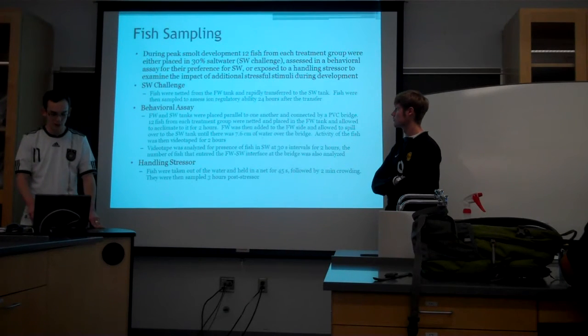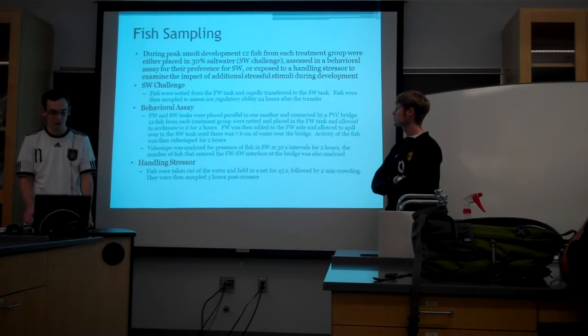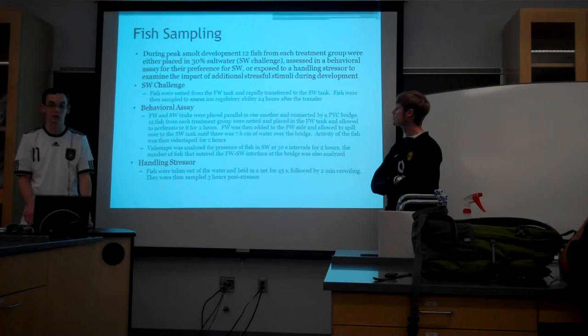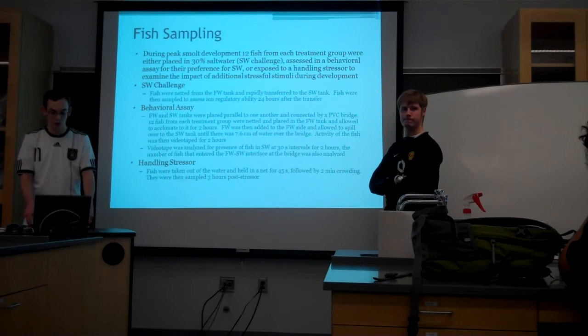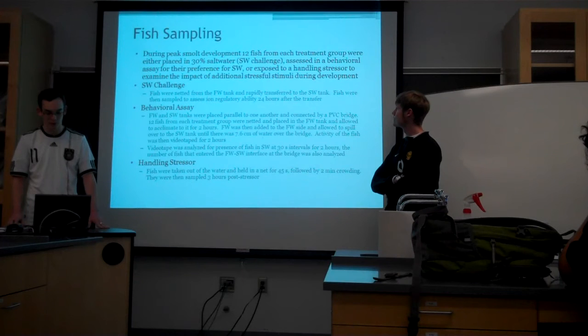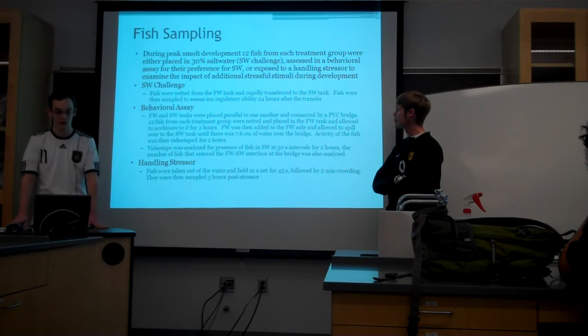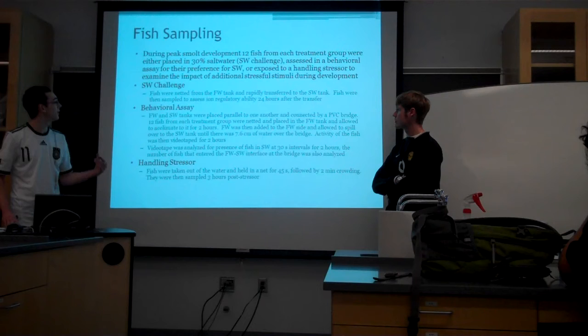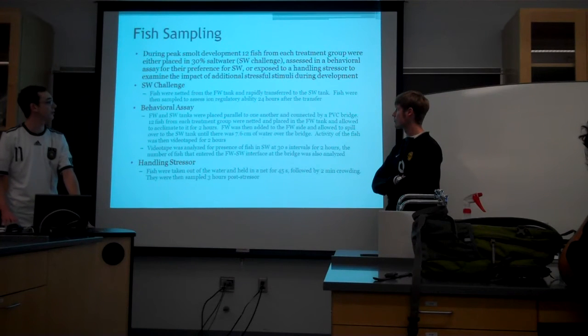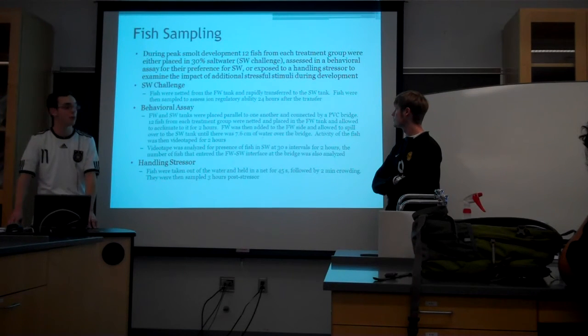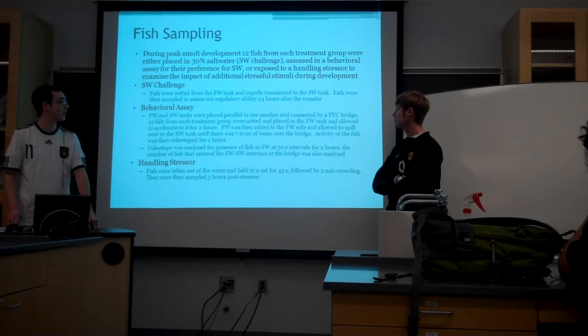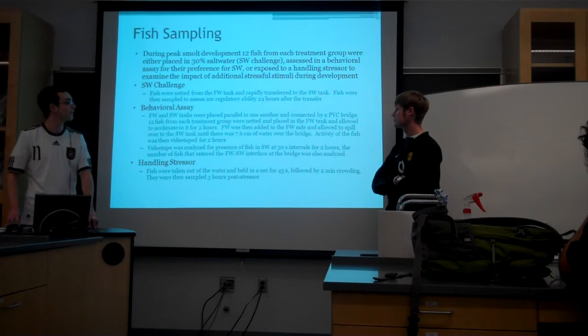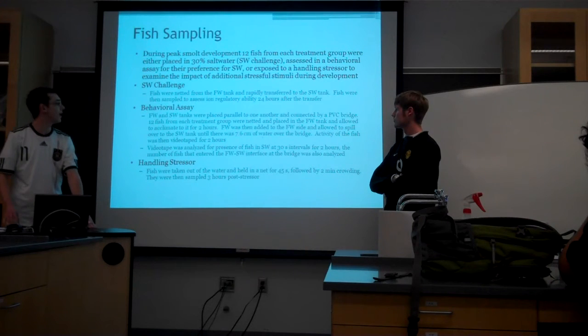Fish sampling: During peak smolt development, 12 fish from each replicate treatment were placed in 30% saltwater for the saltwater challenge, assessed in a behavioral assay for their preference for saltwater, or exposed to a handling stressor to examine the impact of additional stressful stimuli during development. The saltwater challenge: the fish were netted from the freshwater tank and rapidly transferred to a saltwater tank. Fish were then sampled to assess ion regulatory abilities 24 hours after the transfer.